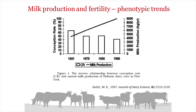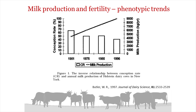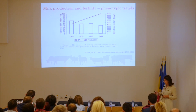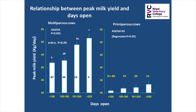A slide from Ron Butler from 1997 made the connection that since the 1950s when artificial insemination became widely used, there was a very rapid increase in milk production potential, but at the same time a decline in fertility. Studies have confirmed genetic correlations between milk production and fertility: positive correlations with calving interval and days to first service — more milk, longer calving interval — and negative correlations with non-return rate at 56 days. These correlations are generally of the order of 0.3, so quite significant.